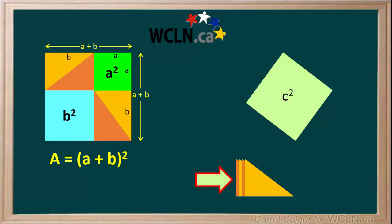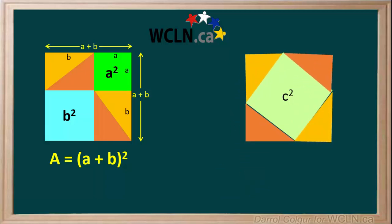Now, we'll take the four identical triangles on the right side and arrange them around the C squared square, like this. Remember, the shorter leg on our triangle is A, and the longer leg is B, so we'll label these on here.